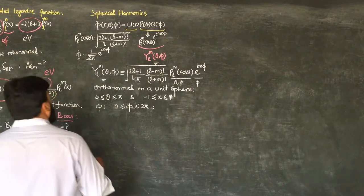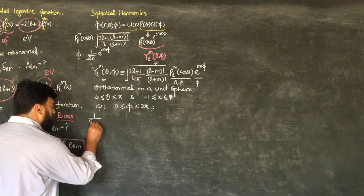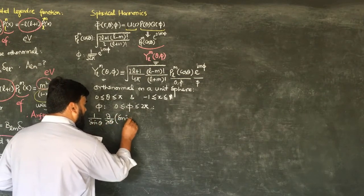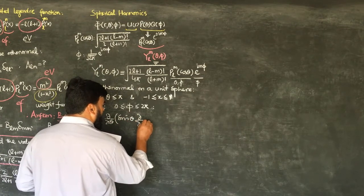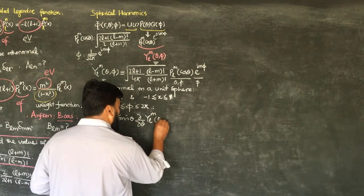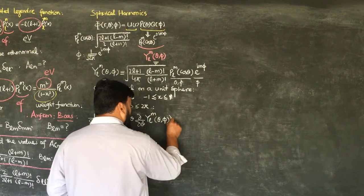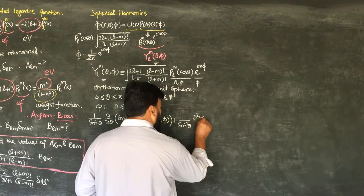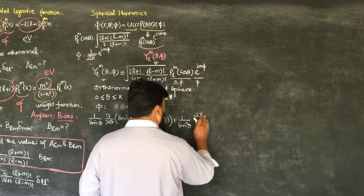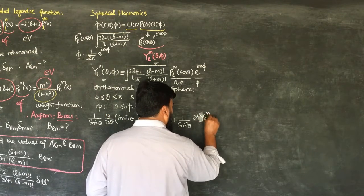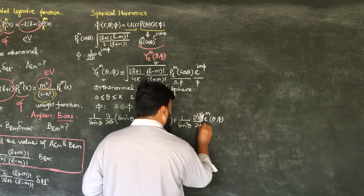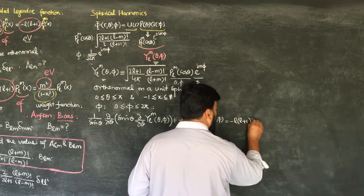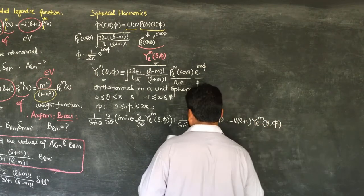So the Laplace equation solution gives us: (1/sin θ)(∂/∂θ)(sin θ · ∂Y_LM/∂θ) + (1/sin²θ)(∂²Y_LM/∂φ²) = −L(L+1) Y_LM(theta, phi). This is the associated Legendre equation result.